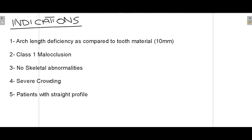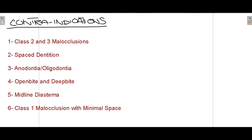The second indication is Class 1 malocclusion where serial extraction can be performed. Third, no skeletal abnormality should be present in either the maxilla or mandible. Fourth is severe crowding, where serial extraction can be performed. And lastly, patients with a straight profile are ideally selected for performing serial extractions.